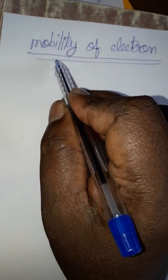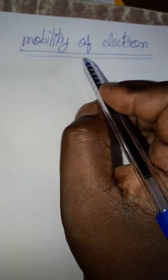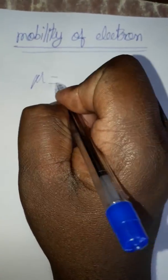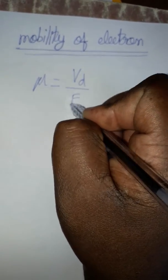Hello friends, today we are going to learn SI unit and dimensional formula for mobility of electron. As we know, mobility is equal to drift velocity by electric field.